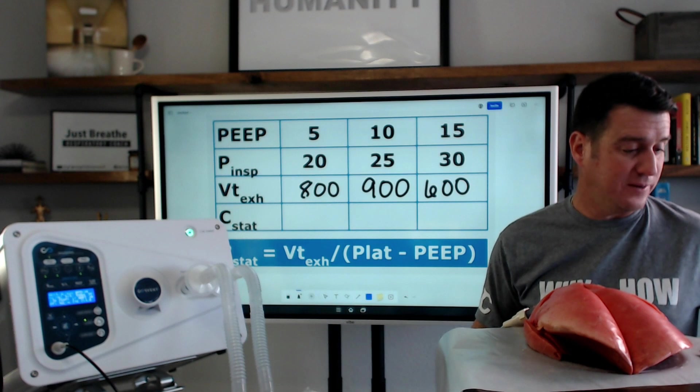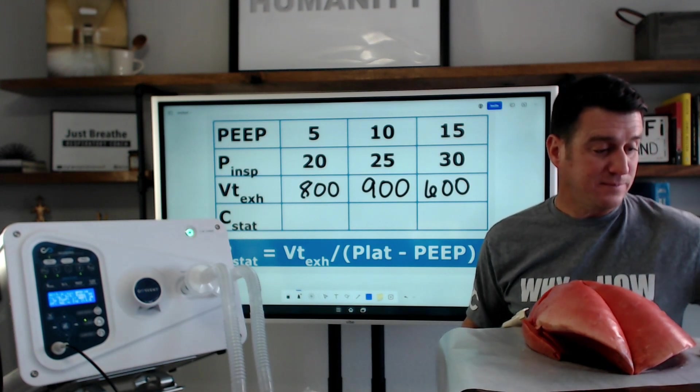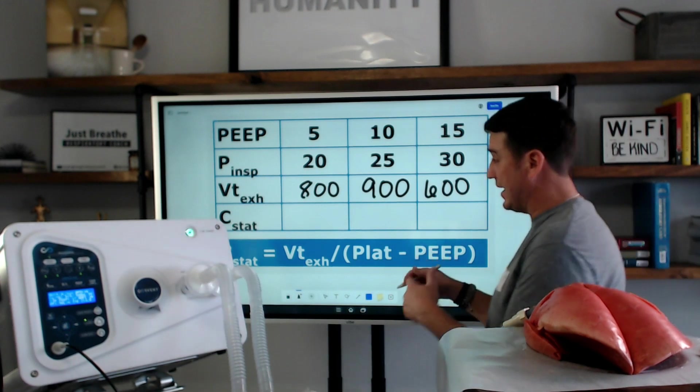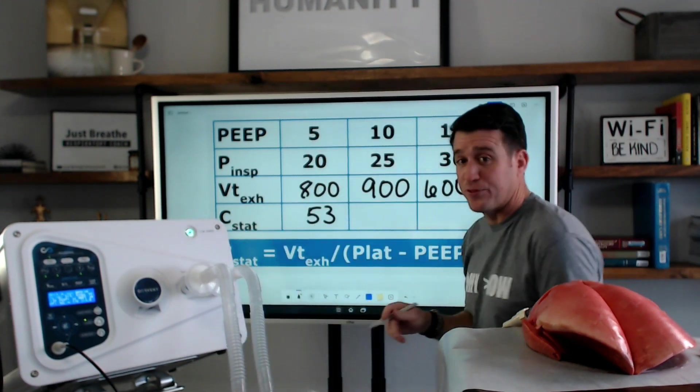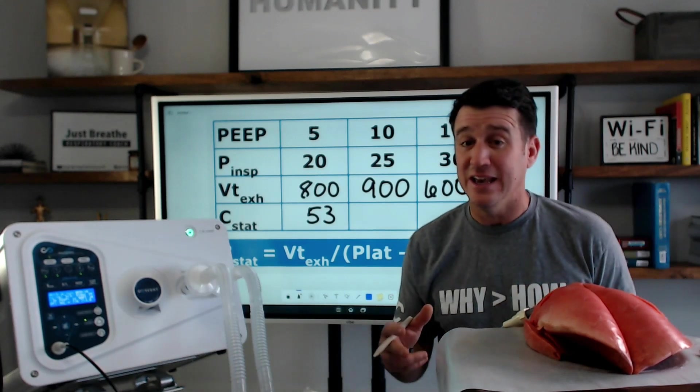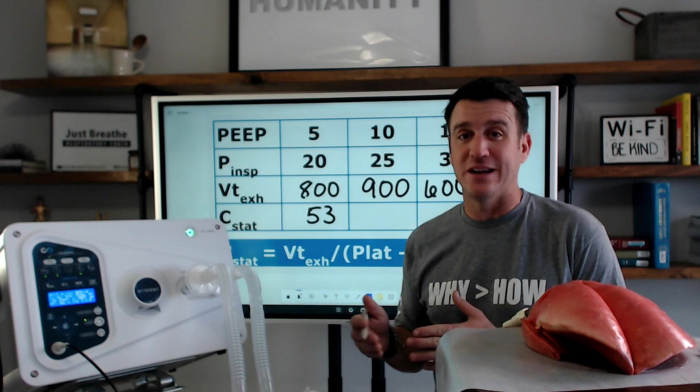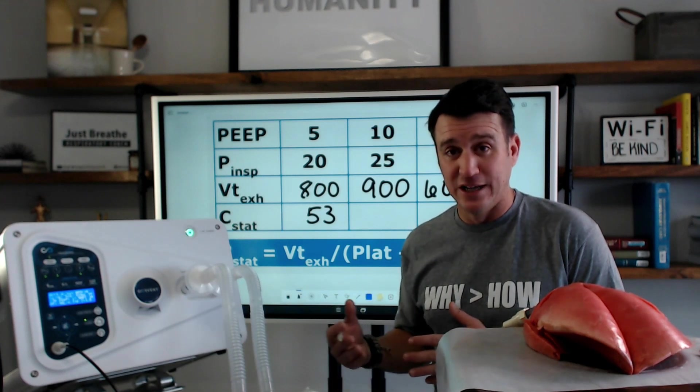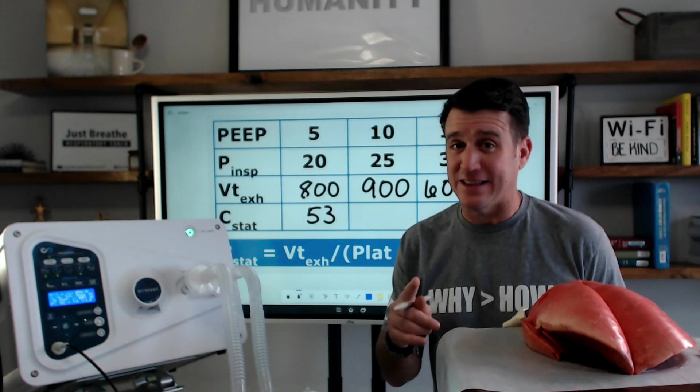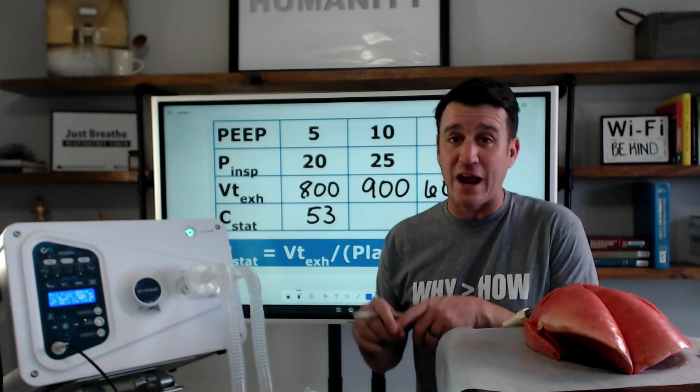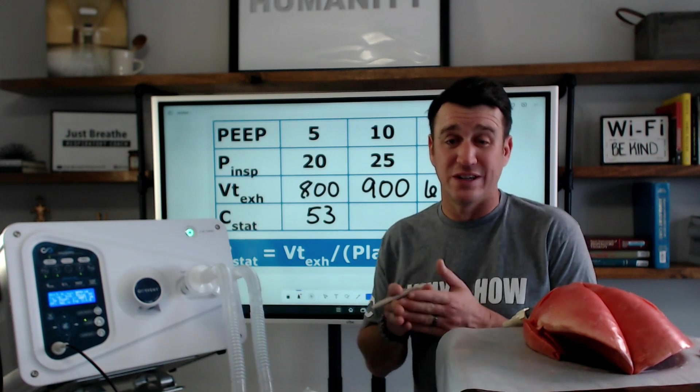This is going to be 800 divided by 15. That gives us a compliance of 53. What that tells us is that 53 milliliters per centimeters of water pressure were delivered during the PEEP of 5 phase. Think about that. 53 milliliters per every one change in centimeters of water pressure was the result.